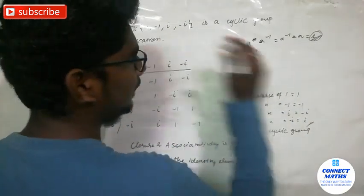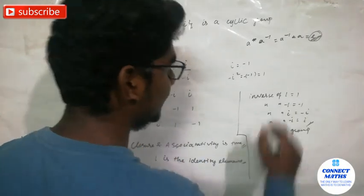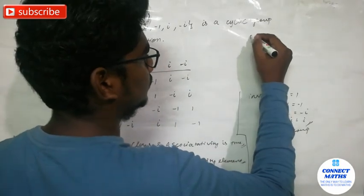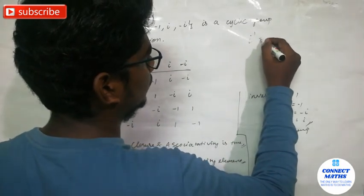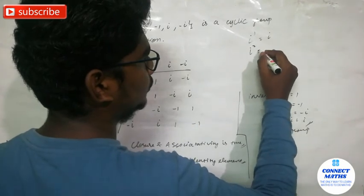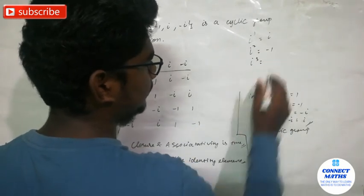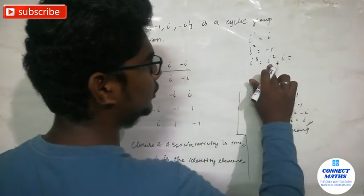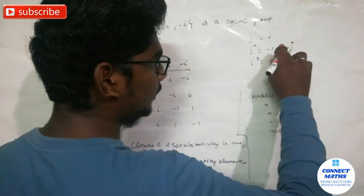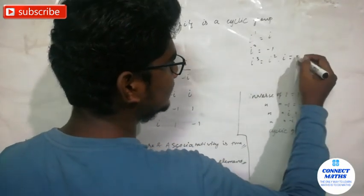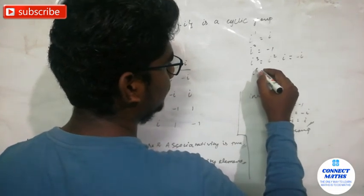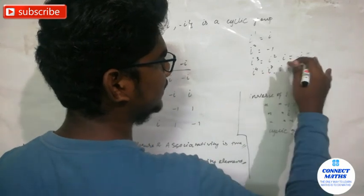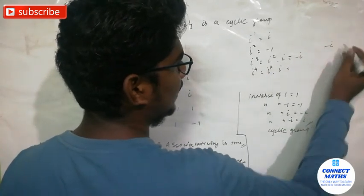Now we check i as a generator. i to the power 1 is i. i to the power 2 is minus 1. i to the power 3: i squared times i is minus 1 times i, which is minus i. i to the power 4 is i cubed times i, and i cubed is minus i, so i to the power 4 equals 1.